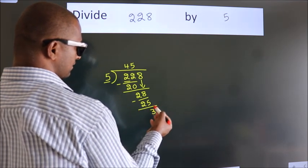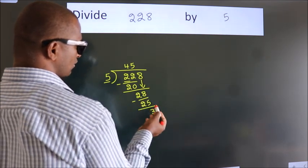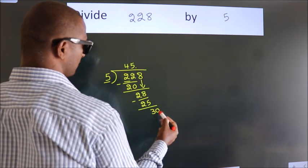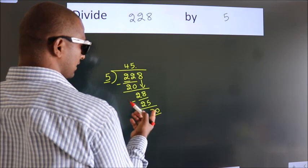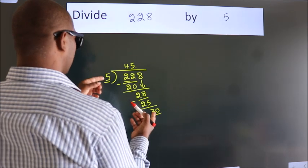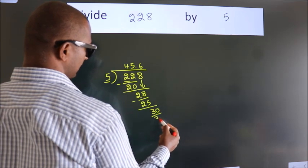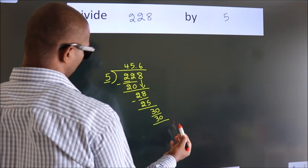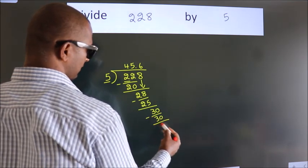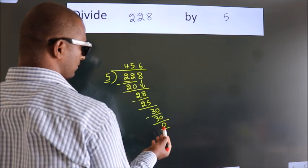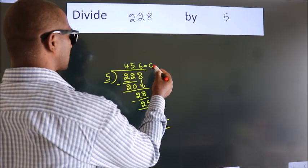After this, no more numbers to bring down. So what we subtract, we get 0. We got remainder 0. So this is our quotient.